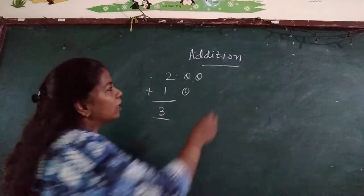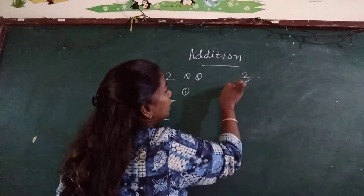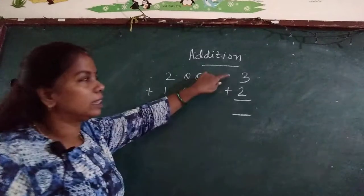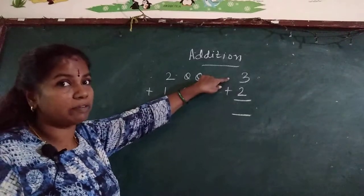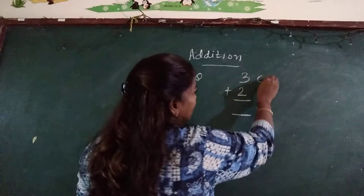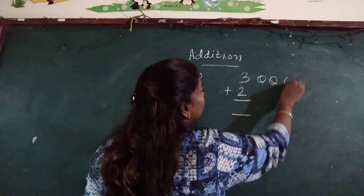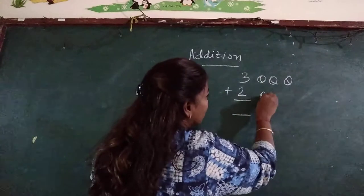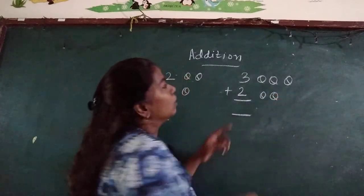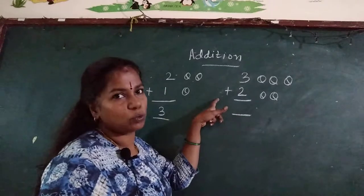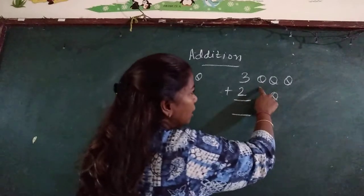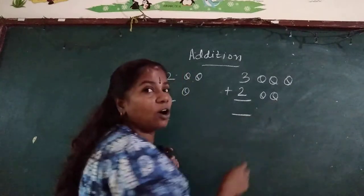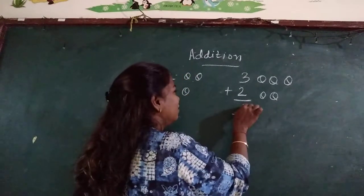Understood? Now 3 plus 2. For 3, how many balls will I draw? 3. Correct: 1, 2, 3. Now for 2, how many balls will I draw? 1, 2. Now 3 plus 2 is equal to 1, 2, 3, 4, 5. How much? 5. Very good.